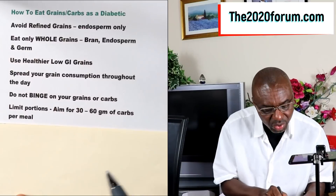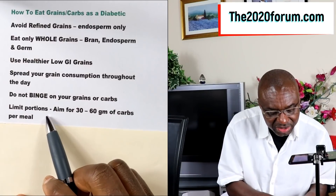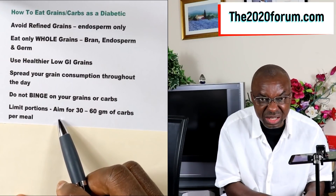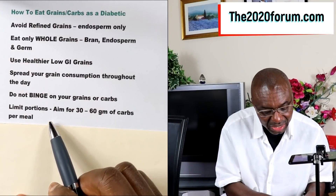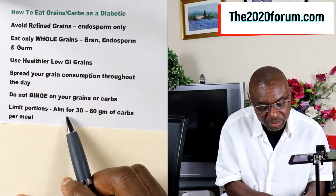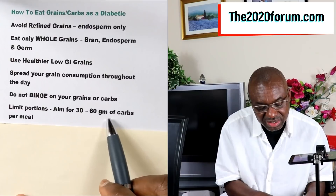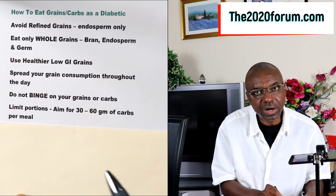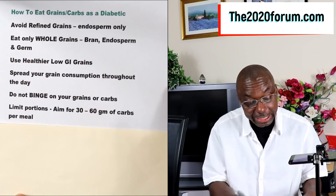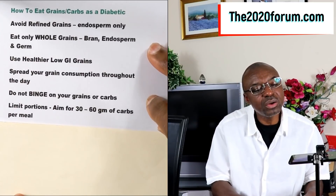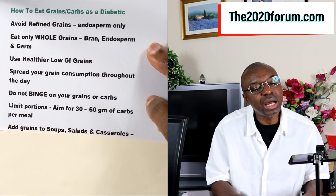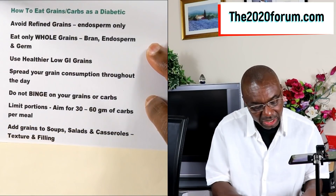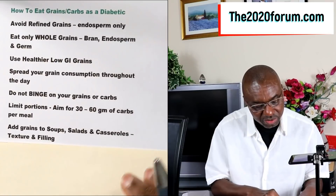The next tip is that we want to limit our portions. We should be aiming for 30 to 60 grams of carbs per meal. Limiting our portions that way will give us a better glycemic response.